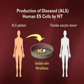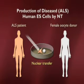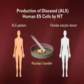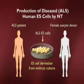In this case, the patient — the ALS patient — who we know has the genes that give rise to the disease, donates a skin cell, the skin cell fibroblast shown there. The nucleus from the fibroblast is removed and injected into the unfertilized and enucleated oocyte. That can then be used to give rise to embryonic stem cells, all in a dish.